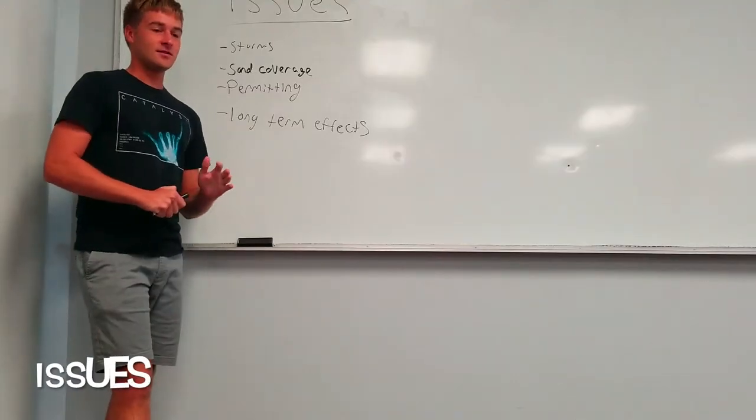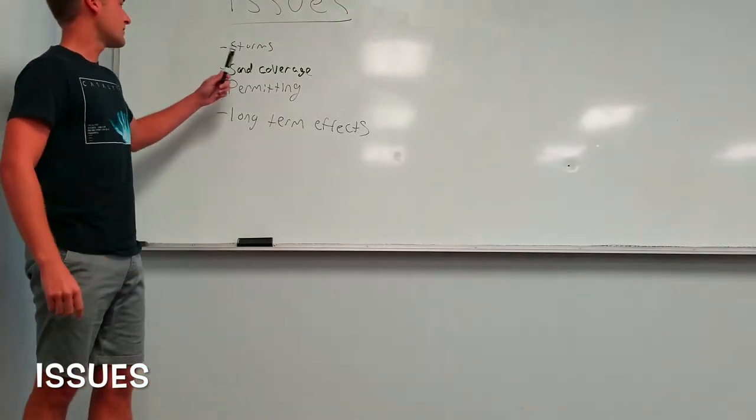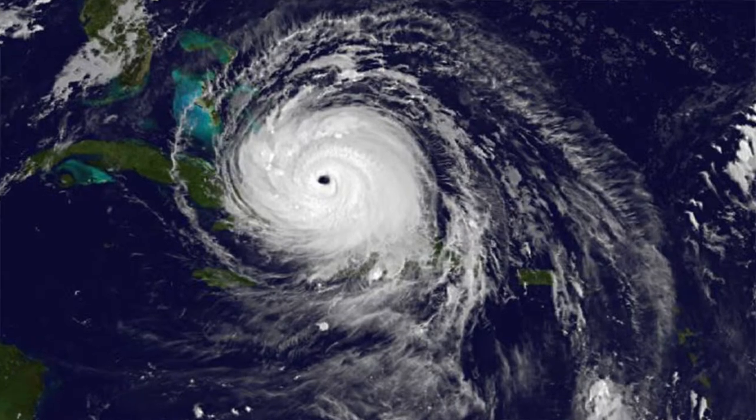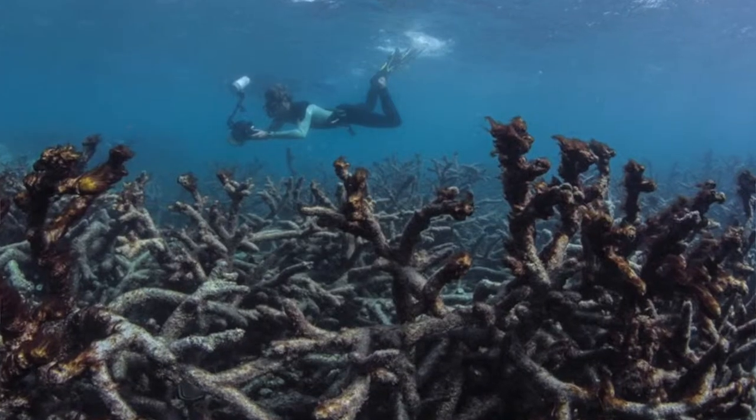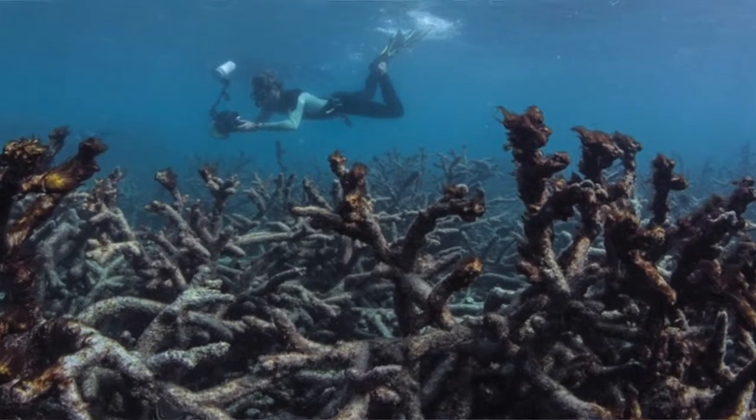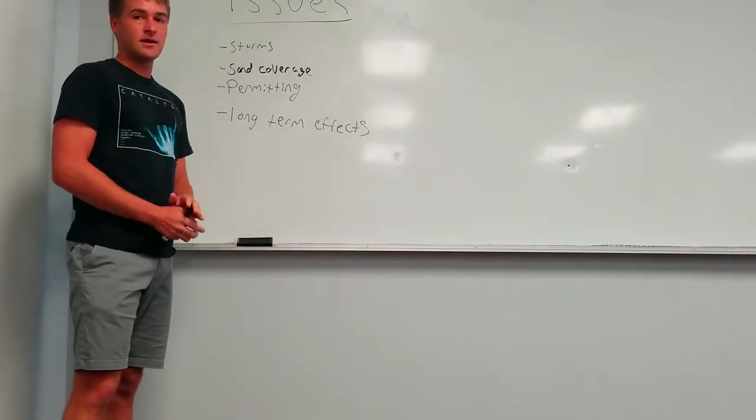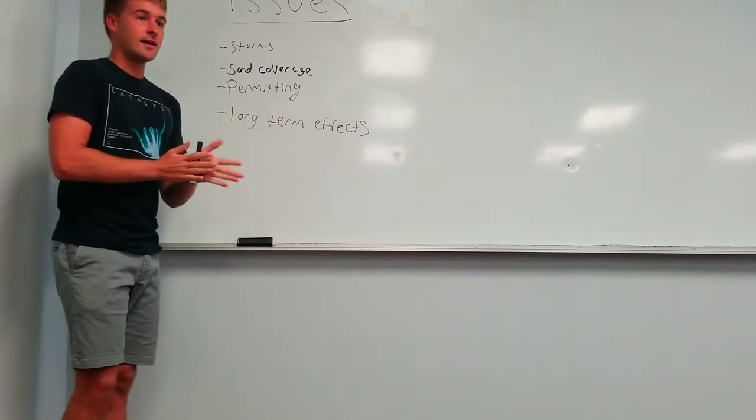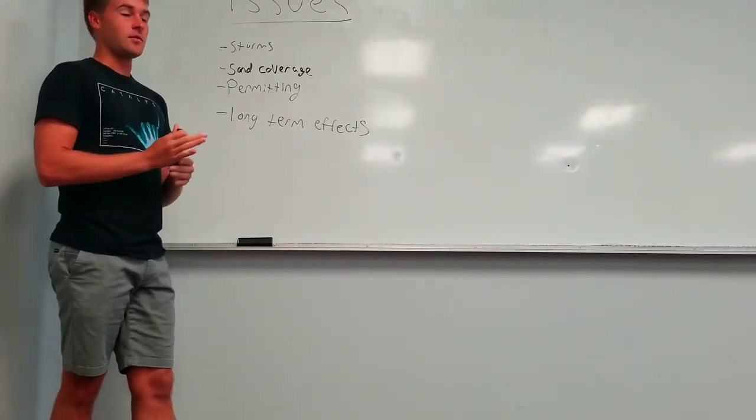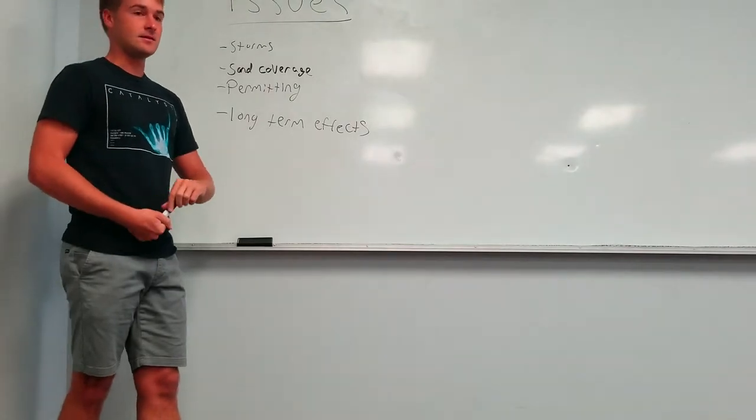Four major issues with our project: the first one being storms. As we design this project and put it in the ocean, there can be many different storms, such as strong cold fronts or hurricanes, that can actually destroy the project sooner than what we expected it to last for. This would cause a very variable aspect in our economic timeline, as the project may not last as long as we expect it to.